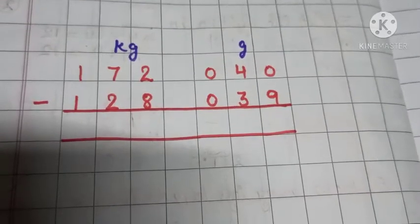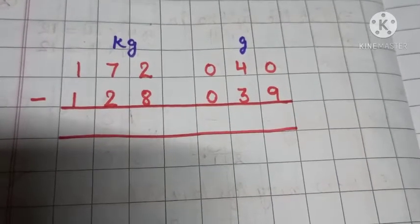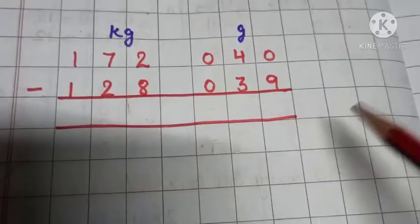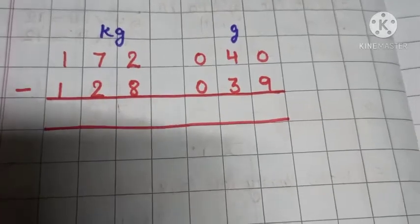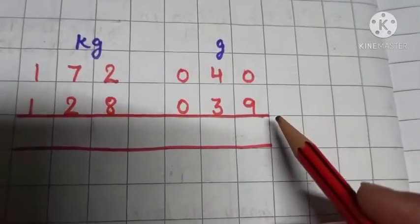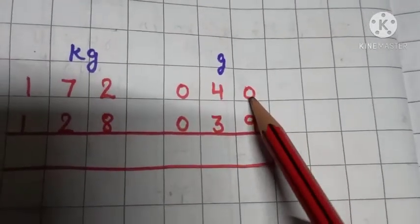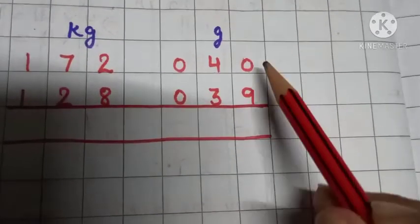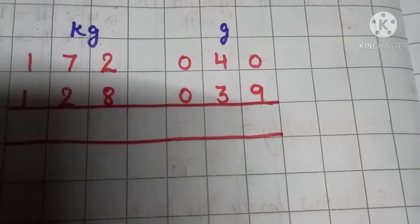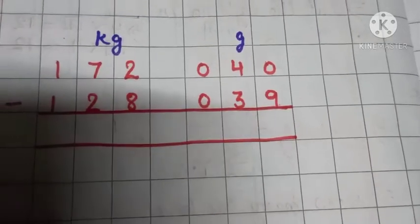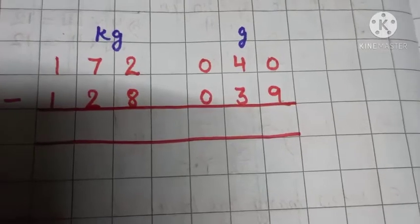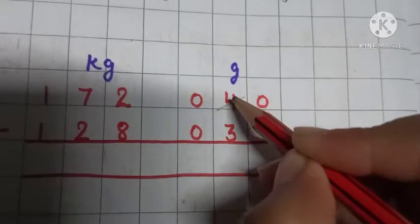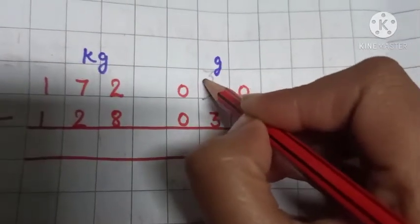Now, let's solve one example of subtraction. This is the sign of subtraction. It means we need to subtract these. We start with the gram. Look here. We have 0 on the top and 9 here. We cannot subtract 9 from 0. So what we have to do here? Yes, we need to borrow a number. When we borrow a number from 4, we are left with 3.